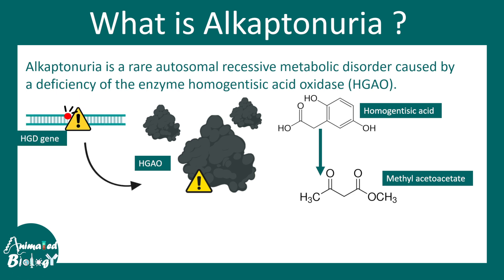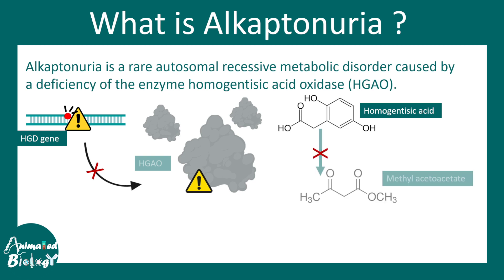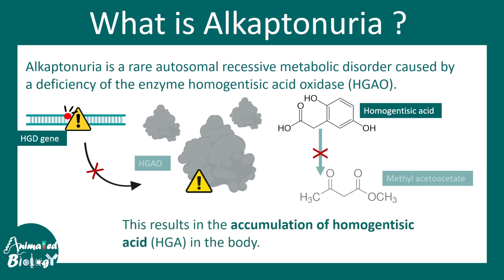This particular enzyme is encoded by the gene HGD, and in cases of mutation in this gene, the enzyme production is abrogated. When there is a deficiency in this enzyme, homogentisic acid cannot be catabolized properly, leading to accumulation of homogentisic acid in the body — and this is the cause of alkaptonuria.